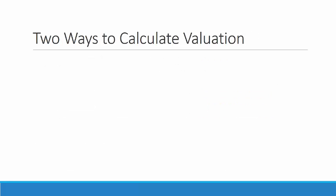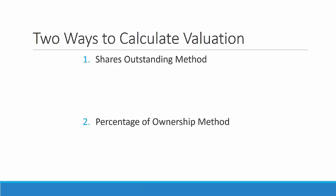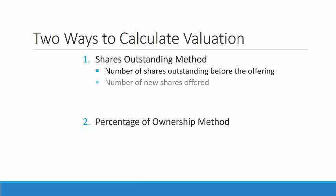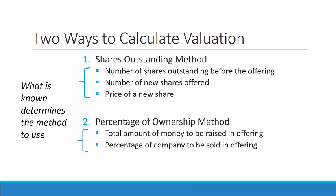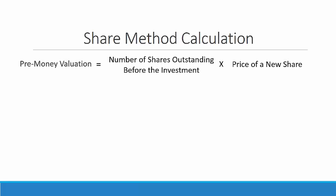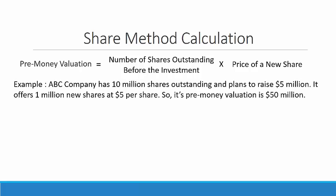There are two ways to calculate valuation: the shares outstanding method and the percentage of ownership method. The shares outstanding method requires the number of shares outstanding before the offering, the number of new shares offered, and the price of a new share. The percentage of ownership method requires the total amount of money to be raised in the offering and the percentage of the company to be sold. Here's the formula: pre-money valuation equals the number of shares outstanding before the investment times the price of a new share. ABC Company has 10 million shares outstanding and plans to raise $5 million. It offers 1 million new shares at $5 per share, so its pre-money valuation is $50 million.